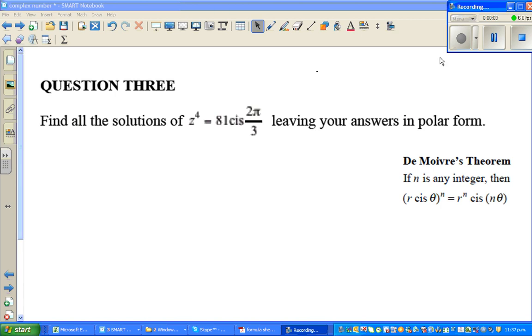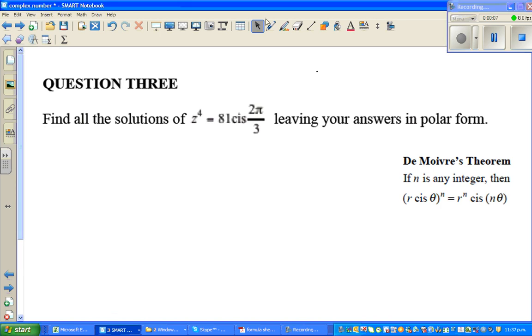Let's look at this question on complex numbers. The question reads: z to the power of 4 is equal to 81 cis 2 pi by 3. Cis is an abbreviation for cos plus i sine theta. Find all the solutions. You have to solve this complex equation.